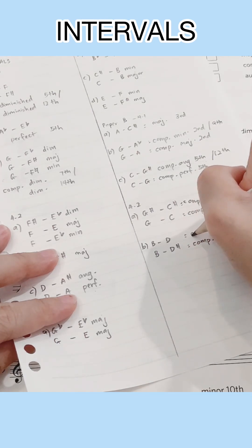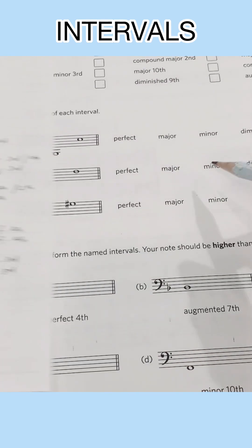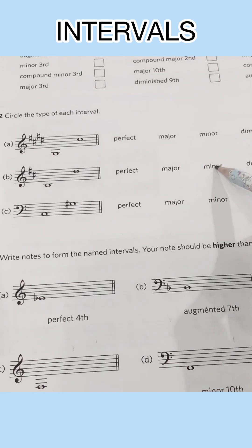And if we reduce the semitone to D natural, then it will be a minor third. So it's a minor type of interval.